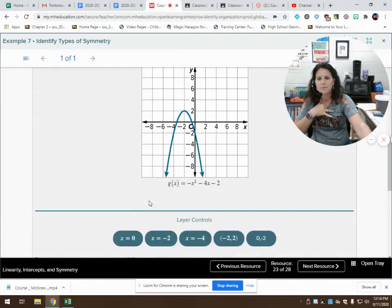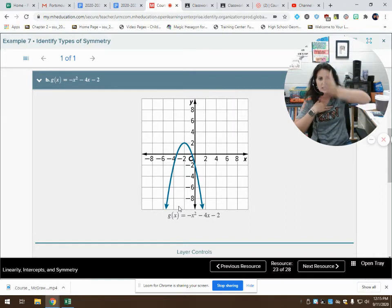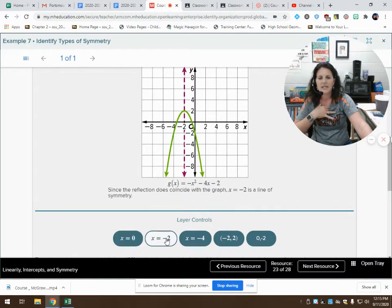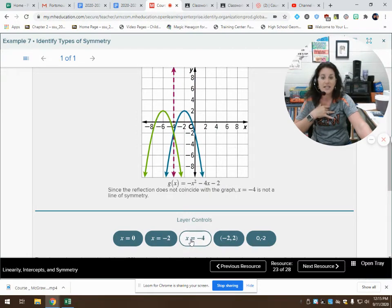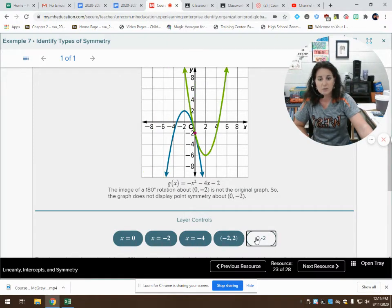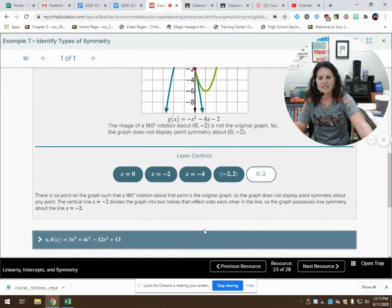Let's try the next one. Does it show line symmetry? You're probably saying, yes, put a line right there through negative 2. A vertical line that passes through x equals negative 2. And it will have line symmetry. It doesn't at 0. It does at negative 2. It does not at negative 4. How about if we rotate about a point? It doesn't work on that one. It doesn't work on that one. So, it does not have point symmetry, but it does have line symmetry.